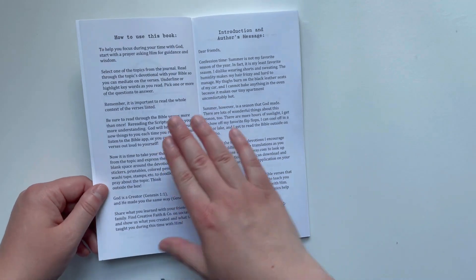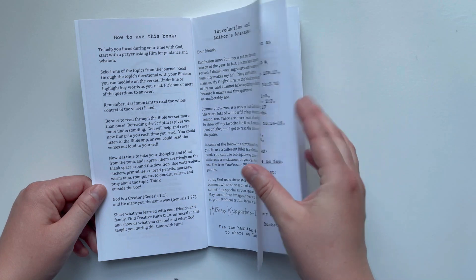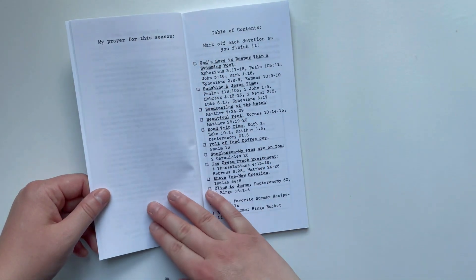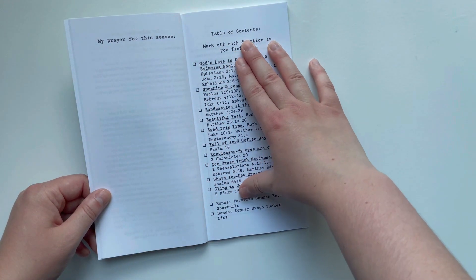It walks you through exactly how to use it. And then over here I have a message from me to you with my thoughts on summer. Hint: I don't love it, but it is a season that God has made, and so I will rejoice and be glad in it. God has a special purpose for this season. There is a spot for you to write a prayer, and then there is a table of contents with all 10 devotions.